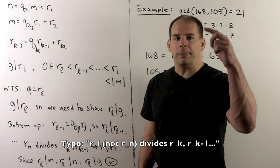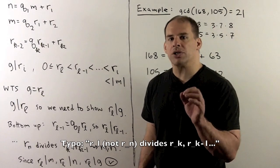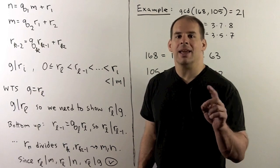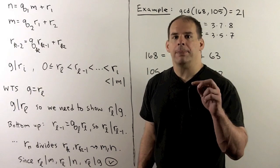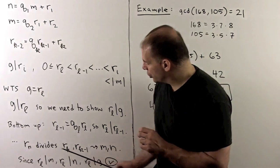So, we're eventually going to work all the way up to the top of the list, which will mean r sub l divides m and r sub l divides n. That means r sub l is going to divide the greatest common divisor. So, that's our result.